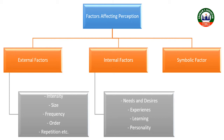The last factor is cognitive style. People are said to differ in the ways they characteristically process information. Every individual is different, and each one processes information according to their own characteristics and cognitive style. These are the important factors that affect perception.